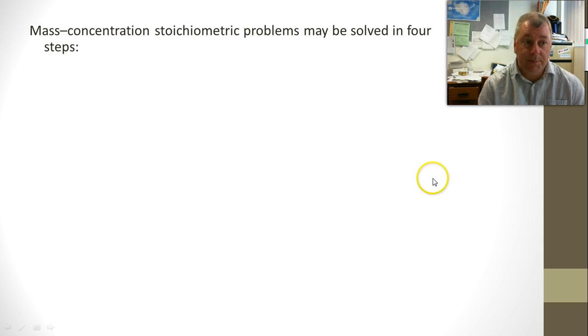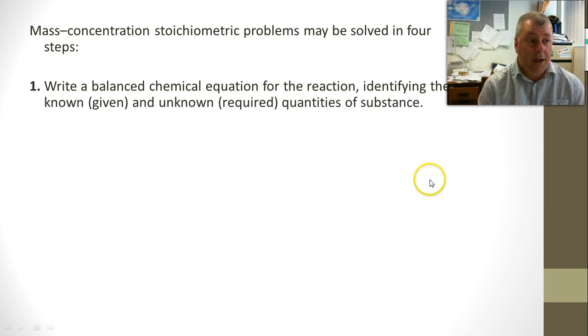So there are four steps, and the first one is to write the balanced chemical equation for the reaction, identifying the known, the given substance, and the unknown, the required quantities of substance.